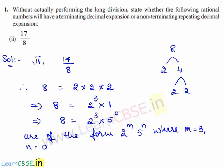Therefore, the decimal expansion for the given rational number 17 upon 8 is terminating.